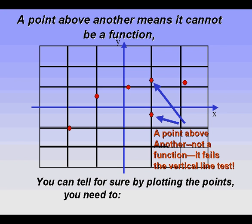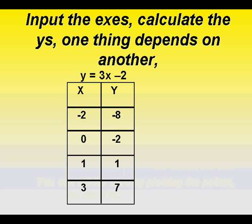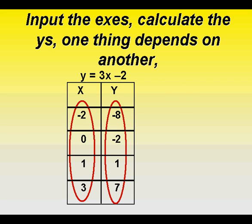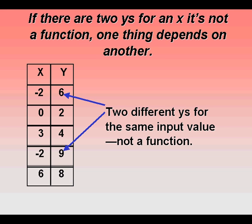A point above another means it cannot be a function. You can tell for sure by plotting the points. You need to input the X's, calculate the Y's. One thing depends on another — if there are two Y's for an X, it is not a function.